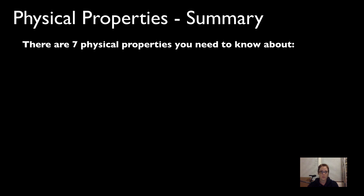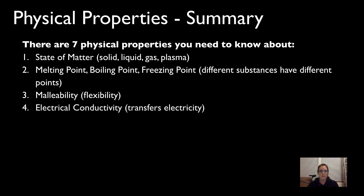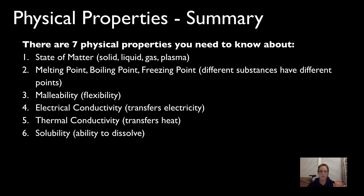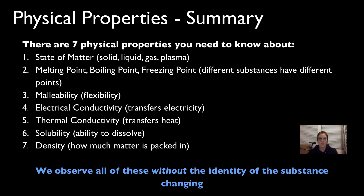To summarize the seven physical properties: first, state of matter — whether something is solid, liquid, gas, or plasma. Second, transition points — melting point, boiling point, and freezing point. Third, malleability — how flexible something is. Fourth, electrical conductivity — the ability to transfer electricity from one place to another. Fifth, thermal conductivity — the ability to transfer heat from one place to another. Sixth, solubility — the ability to dissolve in another substance. And seventh, density — how much matter is packed in. It's important to know that we observe all of these without the identity of the substance changing — these are things we can observe with our senses.